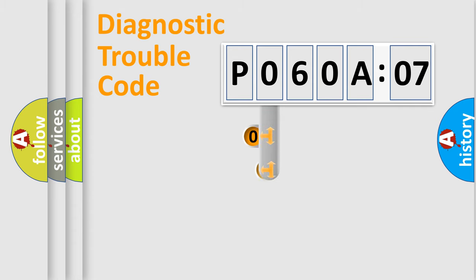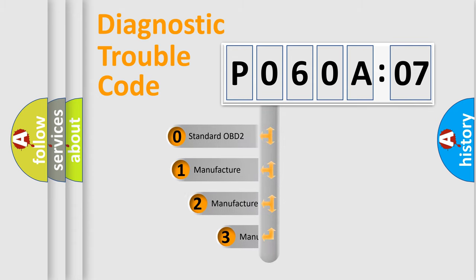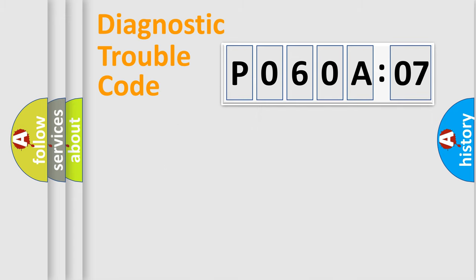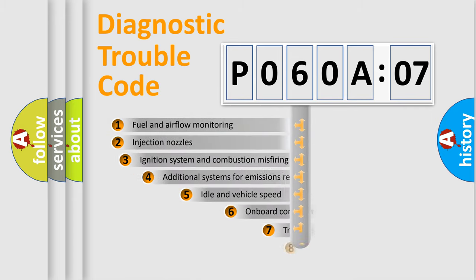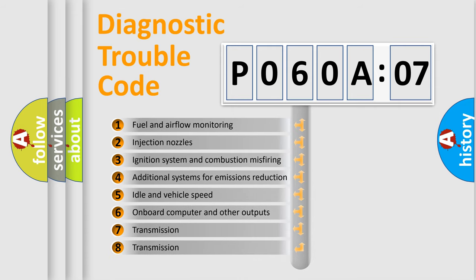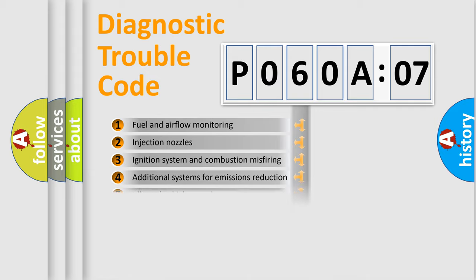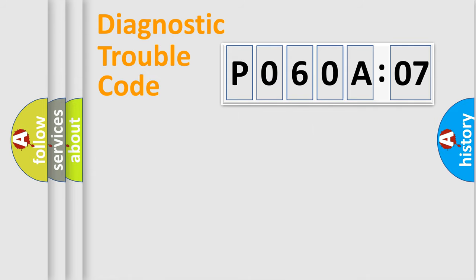This distribution is defined in the first character code. If the second character is expressed as zero, it is a standardized error. In the case of numbers 1, 2, or 3, it is a manufacturer-specific error. The third character specifies a subset of errors. The distribution shown is valid only for the standardized DTC code. Only the last two characters define the specific fault of the group.